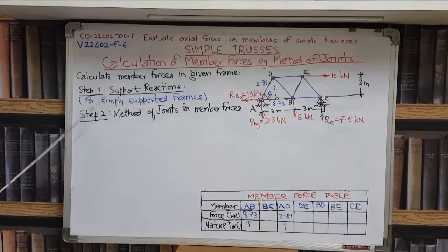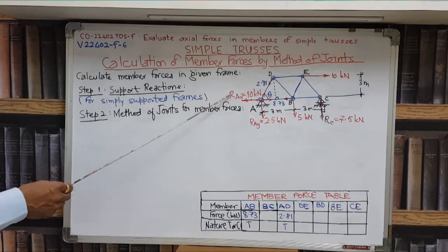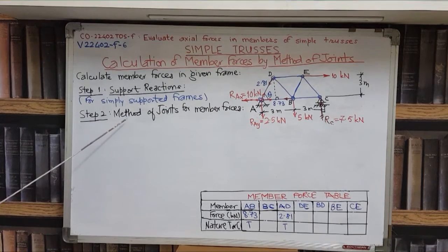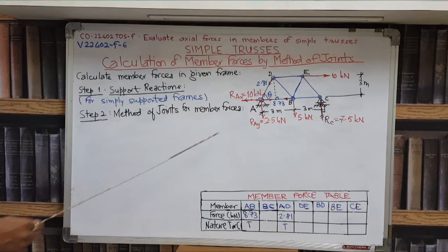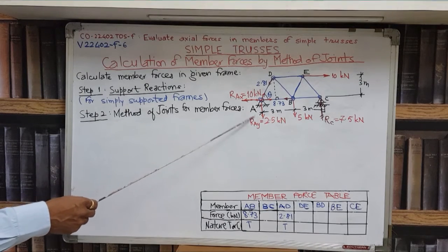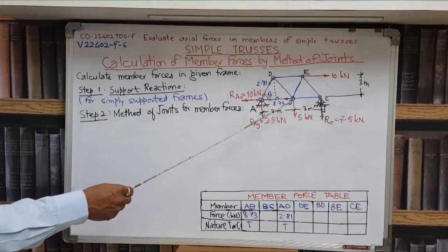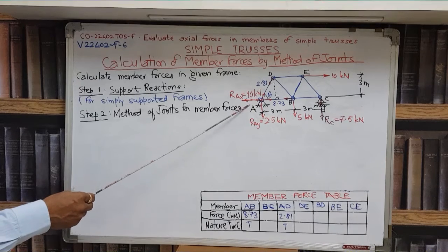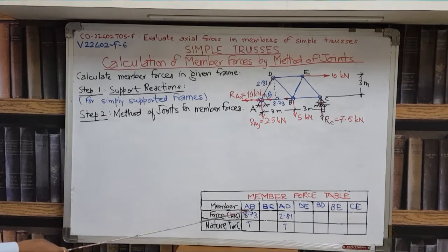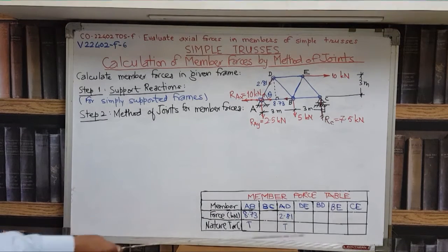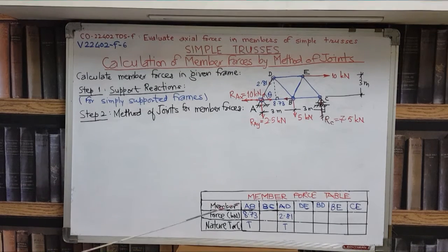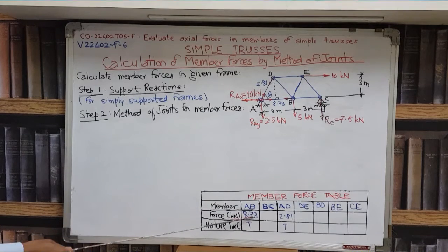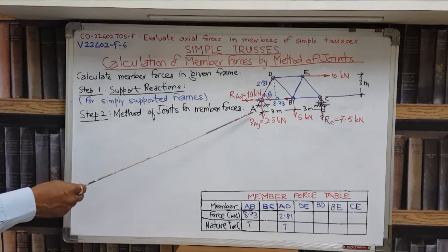We are solving a numerical problem on calculation of member forces in a given frame. In step 1 in the last video we calculated support reactions for simply supported frames as RAX, REY and RC. In step 2 we apply the method of joints for calculation of member forces. In the last video we analyzed joint A and found the member forces in member AB as 8.73 kN and member AD as 2.81 kN. We have noted the values in this table. Now we have to continue with finding forces in the other members. We know that totally there are 7 members and we have found out 2 member forces.